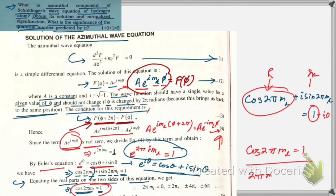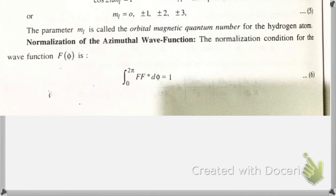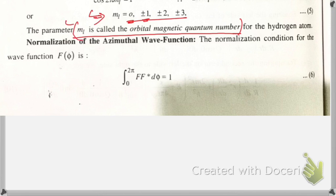From this, ml must be either 0 or positive or negative integers. Here ml is the orbital magnetic quantum number — the quantum number predicted by the azimuthal equation. Now let us normalize the eigenfunction.